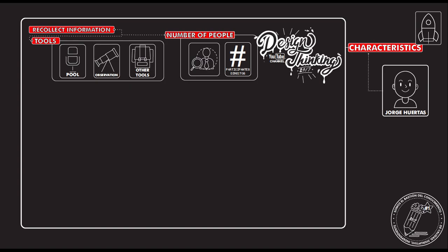Then I specify the number of people that participate in the survey or in the recollection. I have to be very specific, because it's not the same if in my observation there were 10 people and in the poll there were a hundred. You have to be really realistic in how you put all the information. If you are more specific in each part, it will be better because people will understand better.